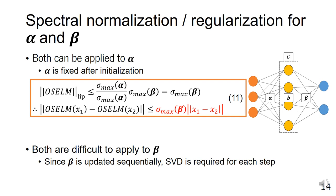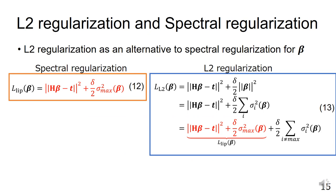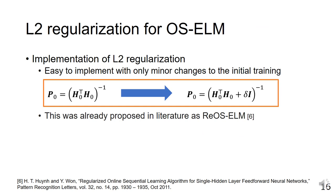As an alternative to the spectral regularization for β, we use the L2 regularization. This is because the spectral regularization is included inside the L2 regularization, as shown in the equation. Using L2 regularization not only reduces the computational cost but also has the advantage of being easy to implement.